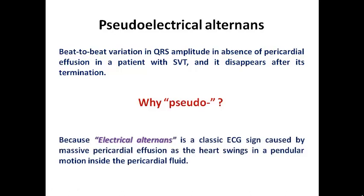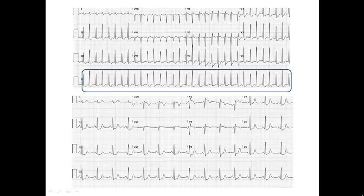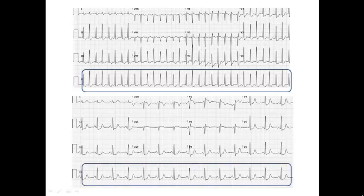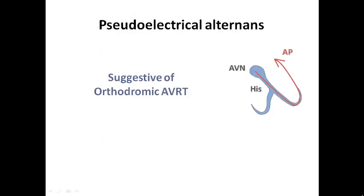We call it 'pseudo' because true electrical alternance is a classic ECG sign caused by massive effusion, as the heart swings in a pendulum motion inside the pericardial fluid. For example, in a patient with SVT, we can see in lead II a peak-to-peak variation in QRS amplitude during SVT; after restoring sinus rhythm, this variation disappears. This is pseudo-electrical alternance.